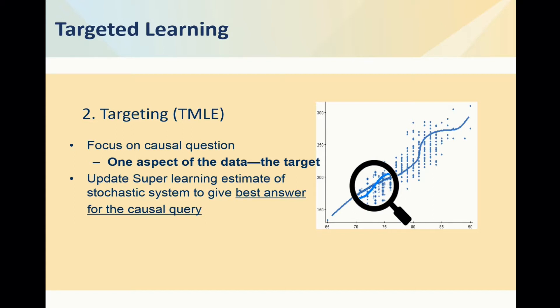We call that targeted learning. It takes the super learner prediction function, but then has another look at it — uses the data for a next round — and updates the super learning fit for the sake of doing a better job on the particular causal query you have, which in this case is the average treatment effect. Because of this step, the estimates get very precise for your precise question, which is not knowing the whole prediction function but just getting that average treatment effect. This step is optimal by theory, and it suddenly allows us to get inference, confidence intervals, and all that.